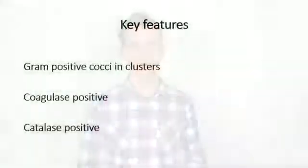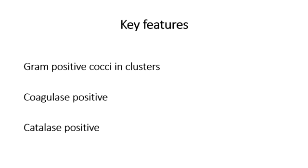We're going to move on and talk about specific species of Staphylococcus, starting with the most common one: Staphylococcus aureus. It shares all the general characteristics — it's gram-positive, cocci, in clusters, and has a thick cell wall. Importantly, as mentioned in the previous video, it is coagulase positive, which is a key thing to remember about Staphylococcus aureus.